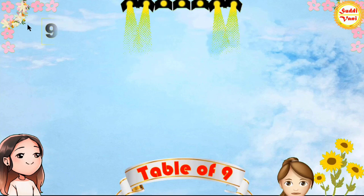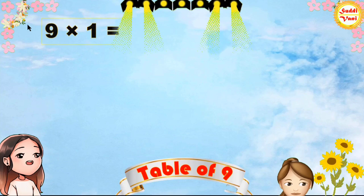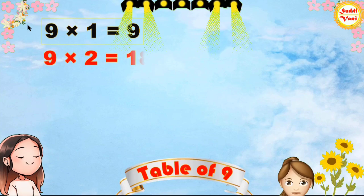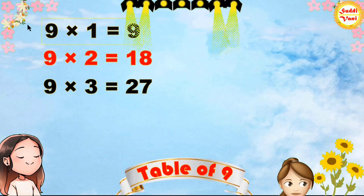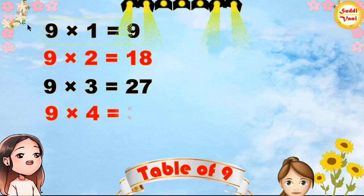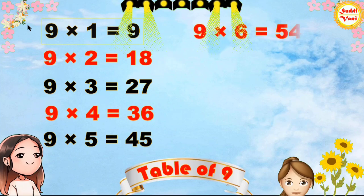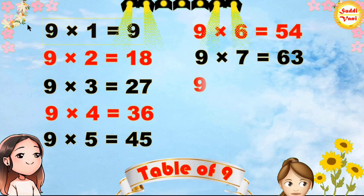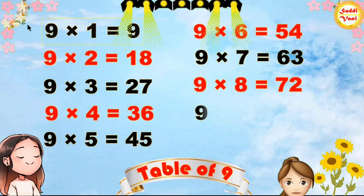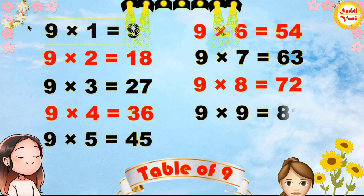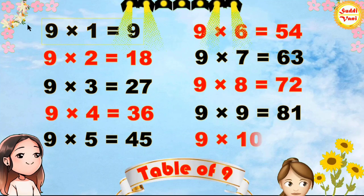Once again: 9 × 1 = 9, 9 × 2 = 18, 9 × 3 = 27, 9 × 4 = 36, 9 × 5 = 45, 9 × 6 = 54, 9 × 7 = 63, 9 × 8 = 72, 9 × 9 = 81, 9 × 10 = 90.